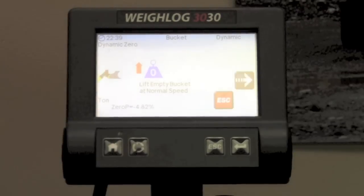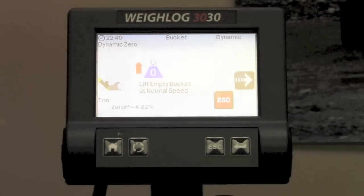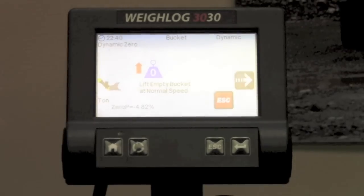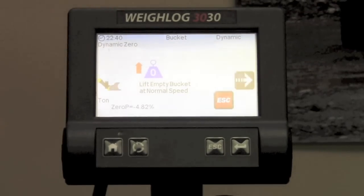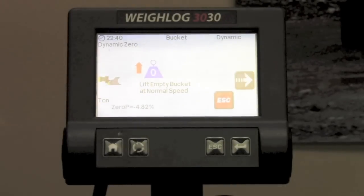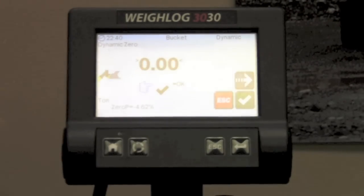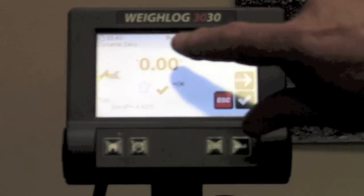So at this point we have set the speed compensation. Then it will ask us to do a normal speed lift with nothing in the bucket. This is actually setting the zero. Now it's set that to zero.